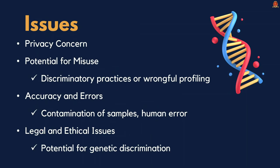Now the issues associated with DNA profiling. The first is privacy concerns — DNA profiling involves collecting and storing personal genetic information, raising concerns about privacy and misuse of data. Unauthorized access or leaks of DNA data can lead to breaches of personal privacy. Next is potential for misuse — DNA profiles could be misused for discriminatory practices or wrongful profiling, particularly if sensitive genetic information is used without consent. The next issue is accuracy and errors — while DNA profiling is highly accurate, errors can occur due to contamination of samples, human error in handling, or technical issues with testing procedures.